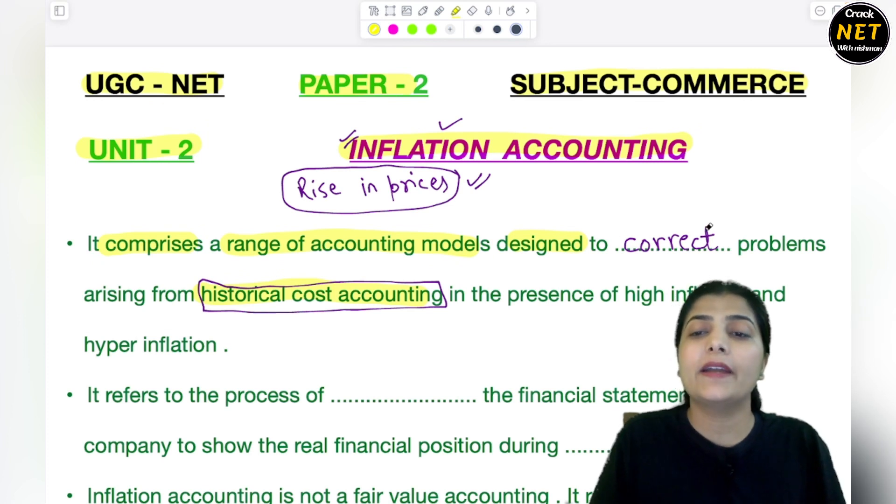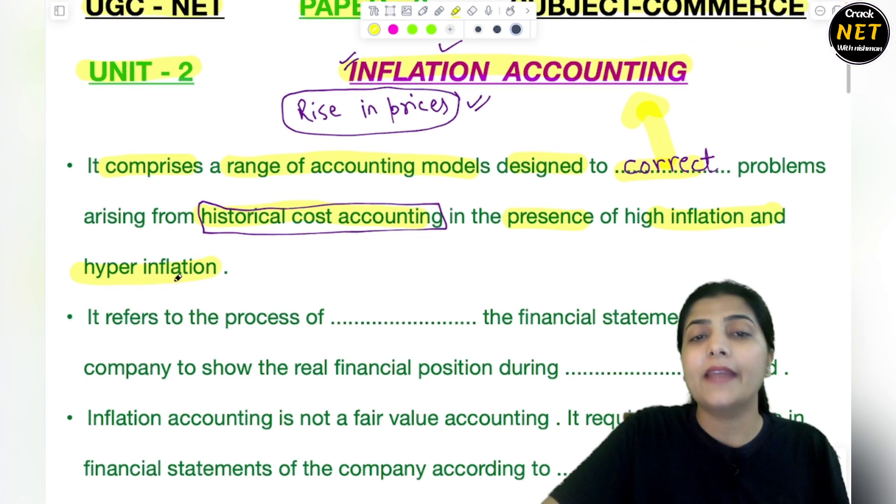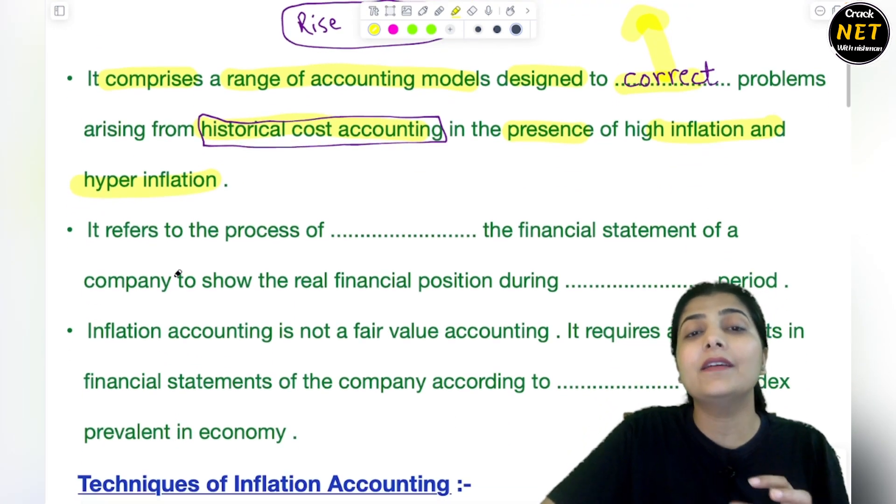That historical cost accounting, the cost you were carrying forward - if in the current scenario there is any problem regarding the price, that is corrected by this method of inflation accounting. Any problem that arises from historical cost accounting in the presence of high inflation and hyperinflation - if there is extremely high inflation or hyperinflation, the highest rise in price - that will result in certain problems.